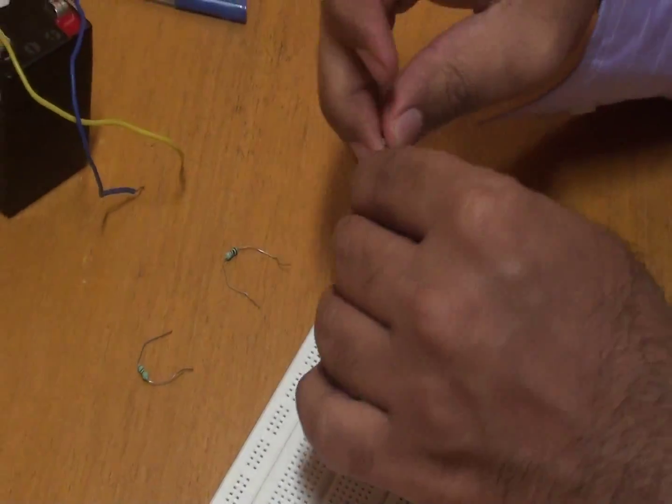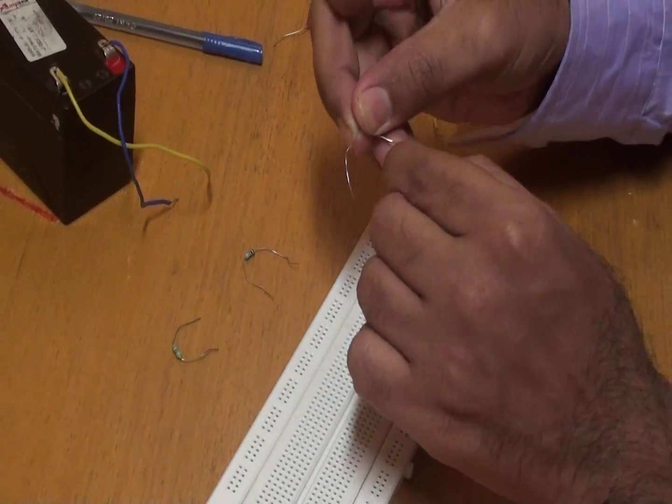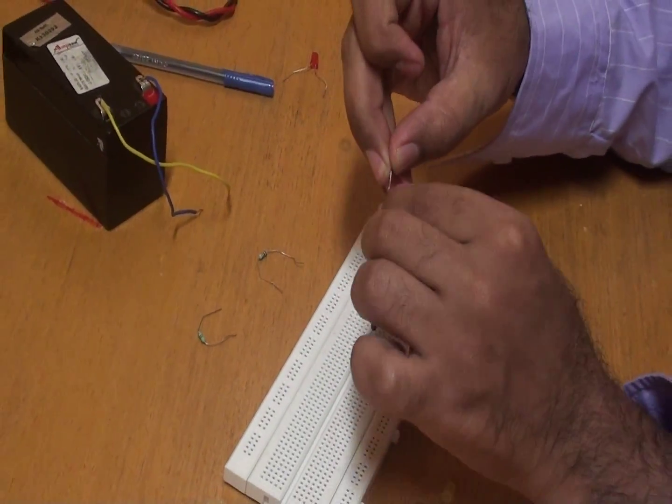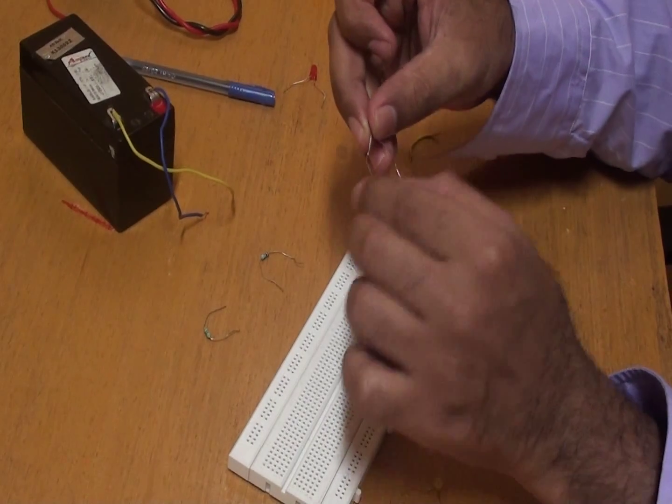So I have just connected a BC547 to the breadboard. Now we will connect the photo resistor. As we saw on the diagram before. So here photo resistor.